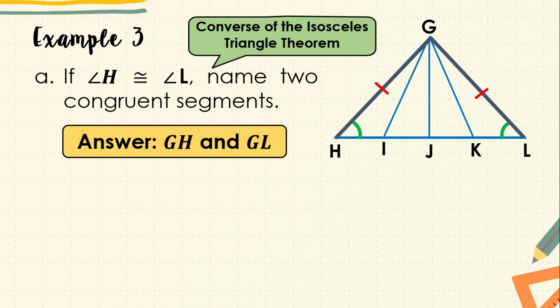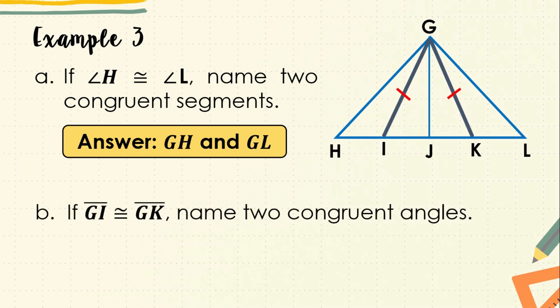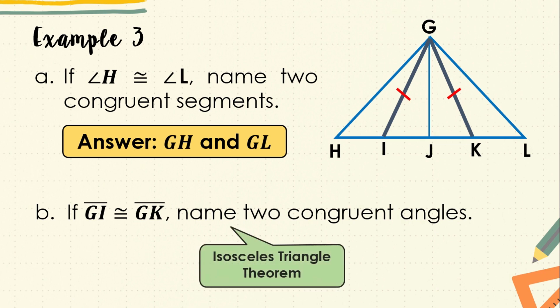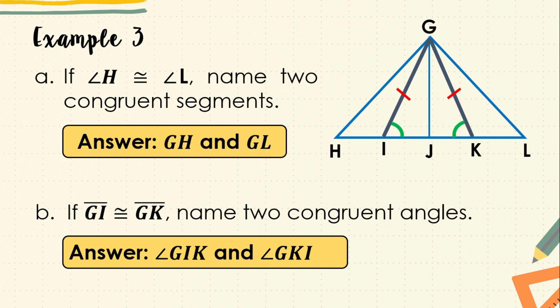Next, letter B: if segment GI is congruent to segment GK, name two congruent angles. For this one, we apply the isosceles triangle theorem, which states that if two sides of a triangle are congruent, then the two angles opposite these sides are also congruent. In our example, those two angles are angle GIK and angle GKI.